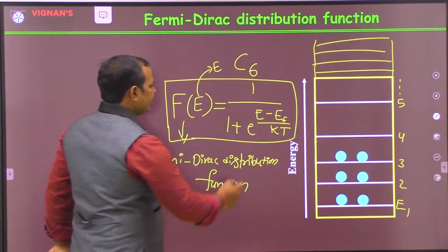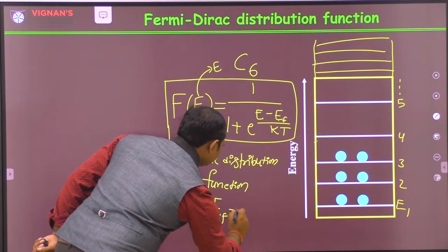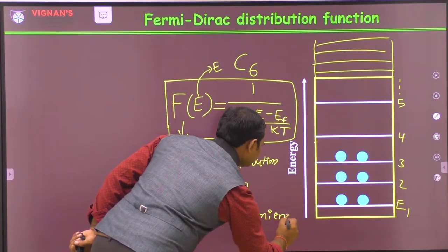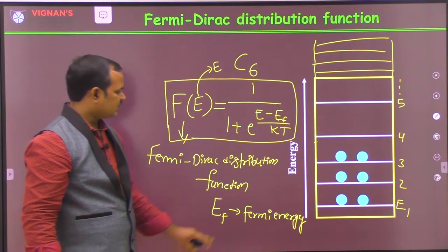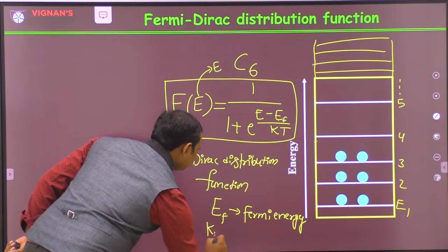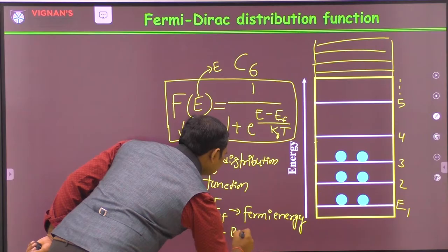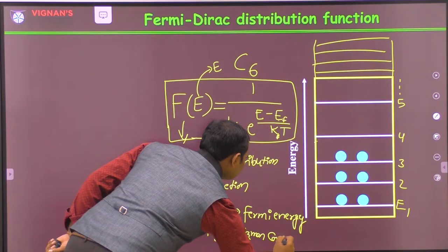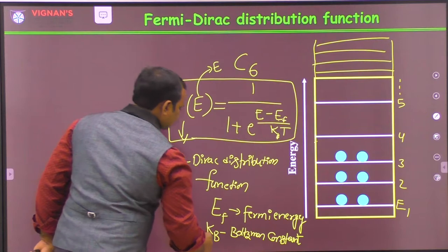Here, EF is called the Fermi energy level. We will see what the Fermi energy level is. K — specifically KB — is the Boltzmann constant, and T is the temperature.